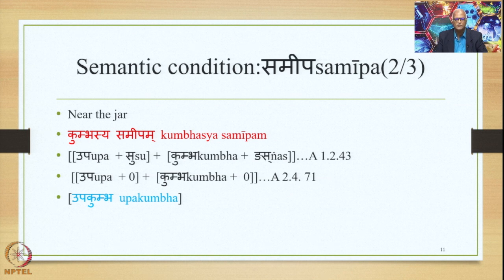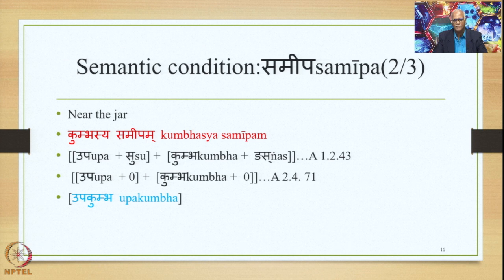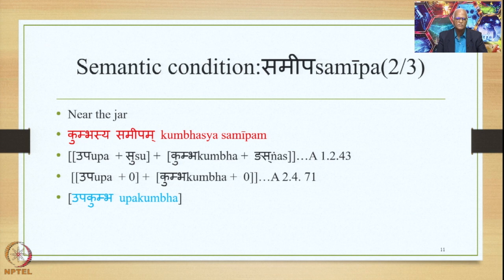In this sutra, 2.1.6, avyayam is mentioned in the Prathama; the indeclinable or avyaya occupies the initial position of the compound. So we have upa + su + kumbha + ngas. This is the laukika vigraha of the samasa. We said this is the stage where the process of compounding is considered to have actually begun. Upasarjanam purvam has already applied, so upa + su has taken the initial position. Then 2.4.71 applies and so we have upa + 0 + kumbha + 0, and when we join both words together we get the form upakumbha as the finally derived compound output, which means the same thing as kumbhasya samipam — near the jar.